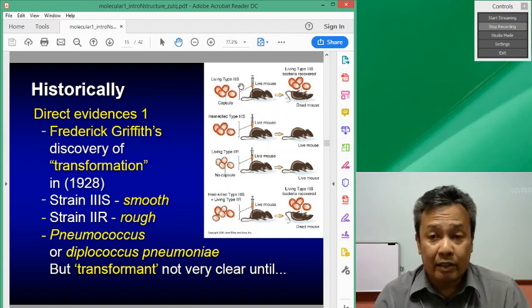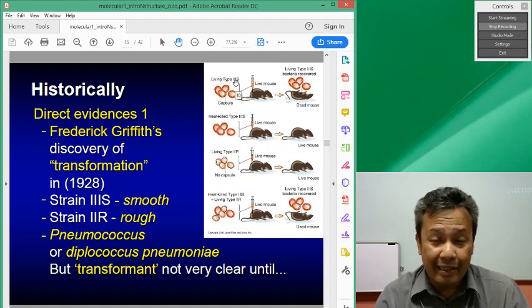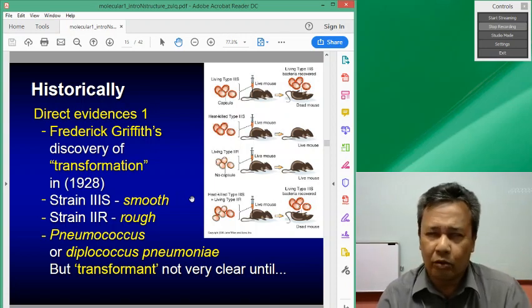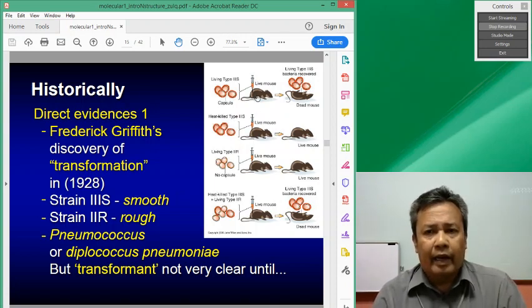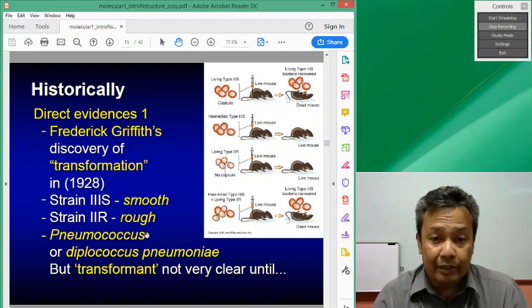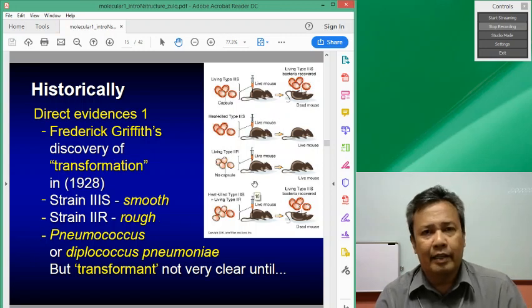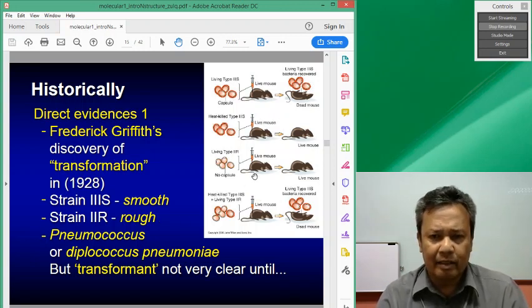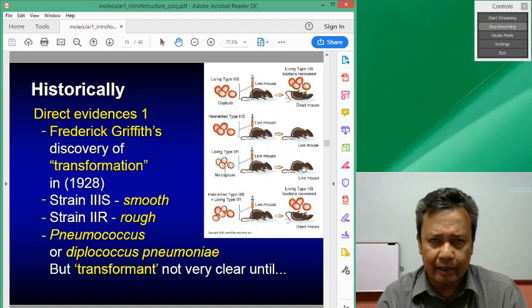The difference in these two types is that the S is the virulent type. S refers to smooth of the structure or appearance of the colony and it is virulent. If you inject it in the mouse, the mouse will die. But the R, which is the rough type, is not virulent. The mouse can still live on.